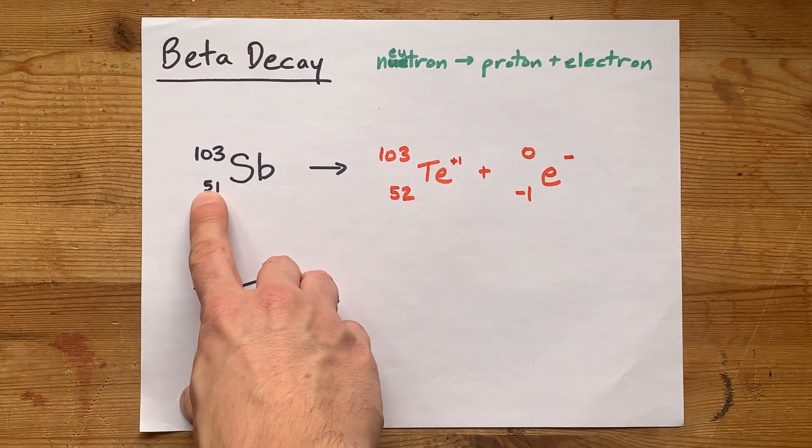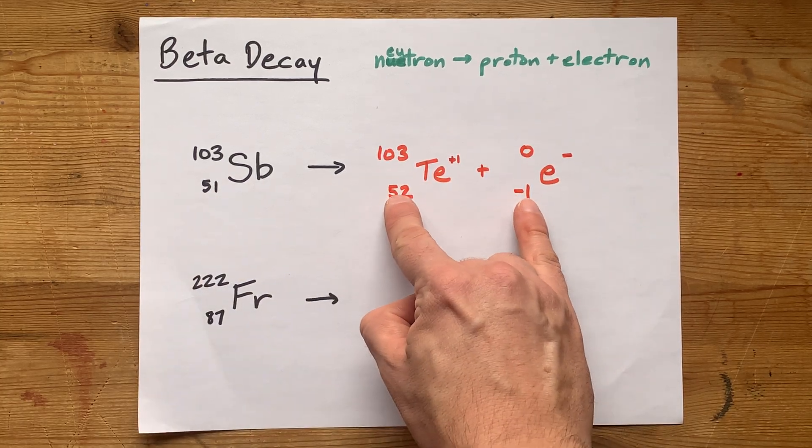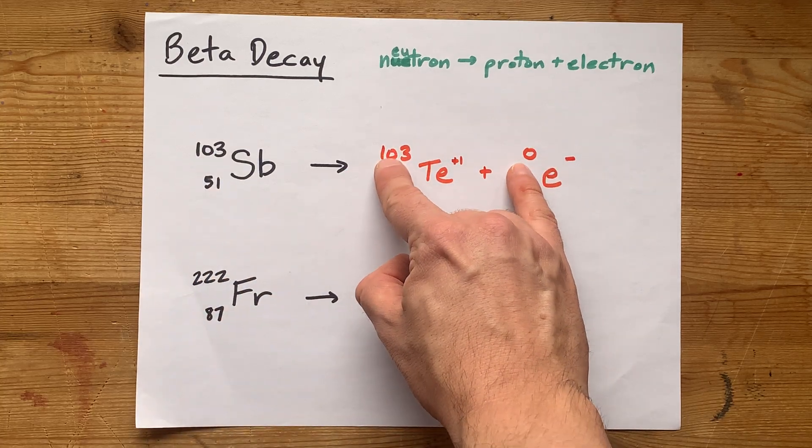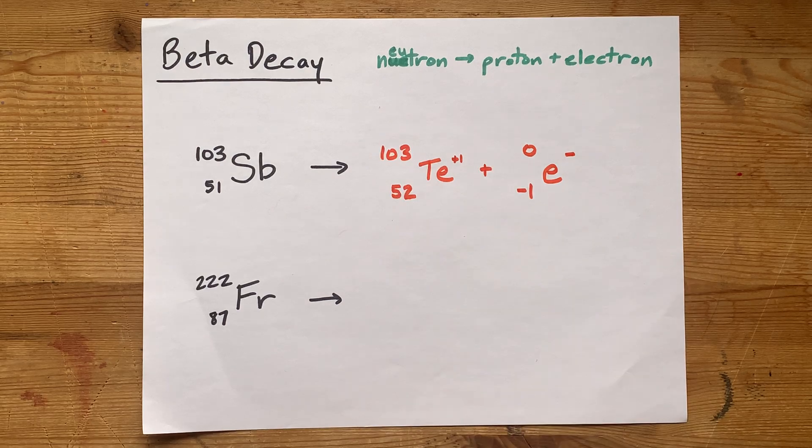Take a look at how 51 is the sum of these two numbers, and 103 is the sum of these two numbers, just like it always is for these nuclear decompositions.